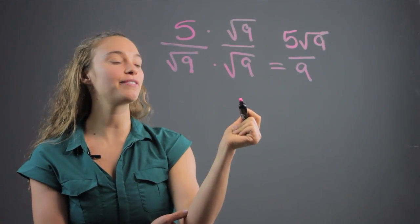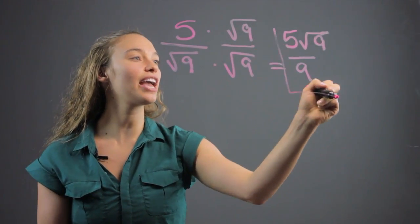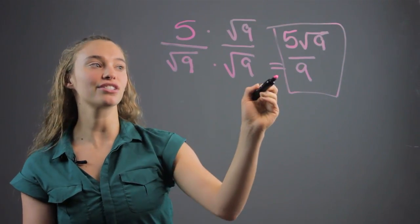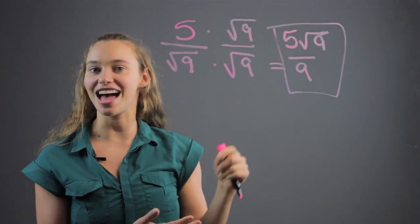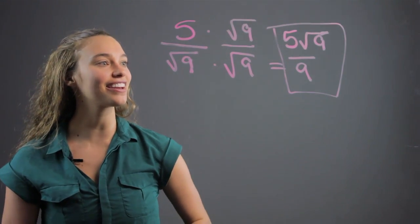There is no more way to simplify, but this is an acceptable form to write this radical expression because there's no square root in the denominator. It's only in the numerator where it's allowed. And now we've simplified the radical expression.